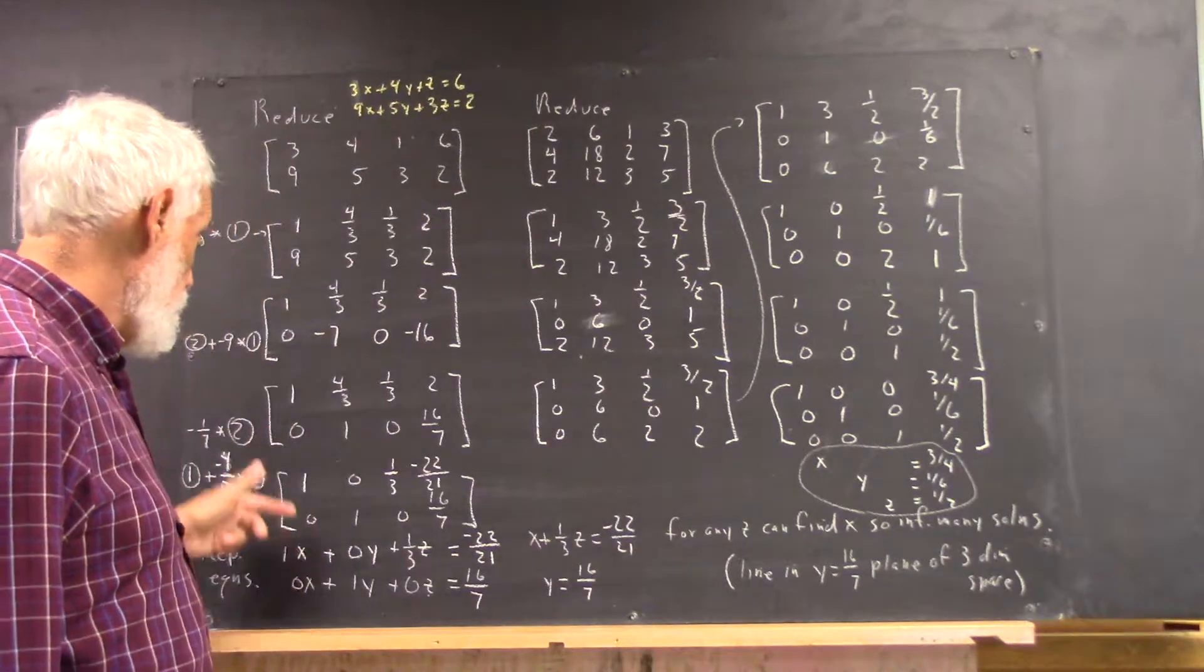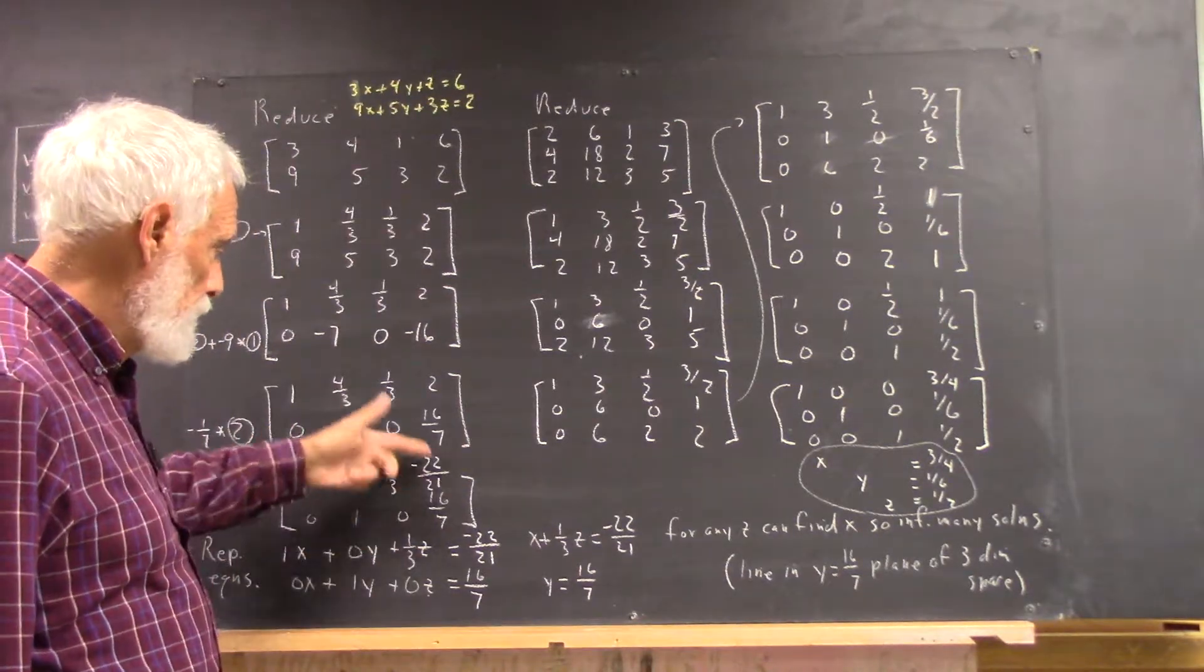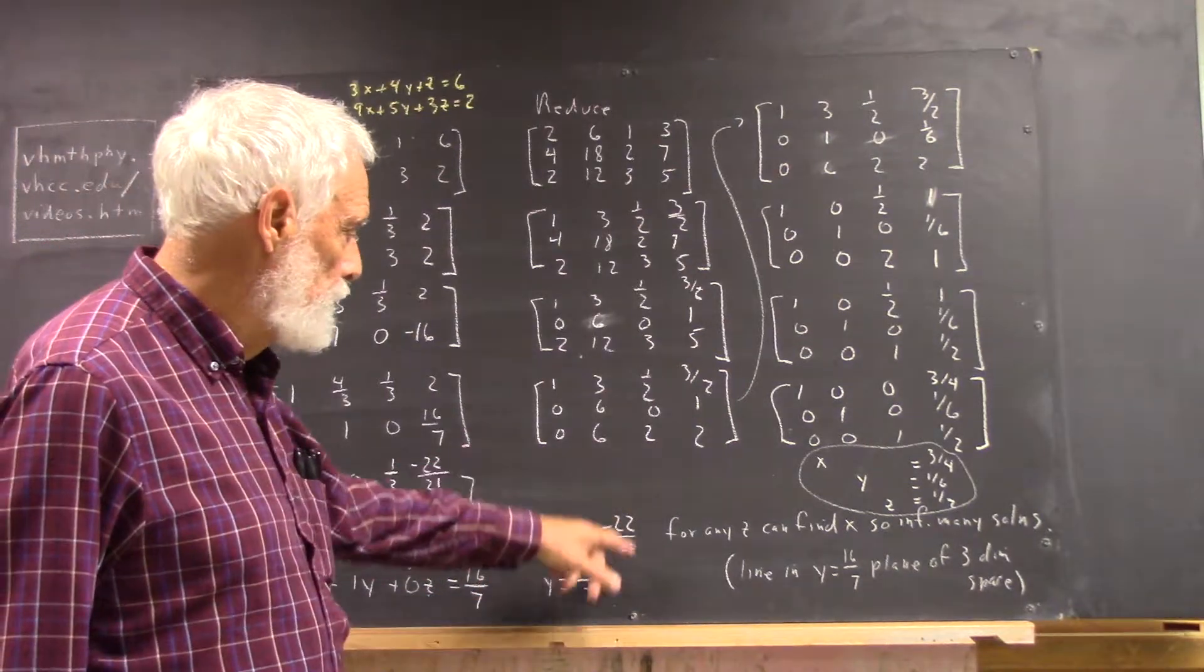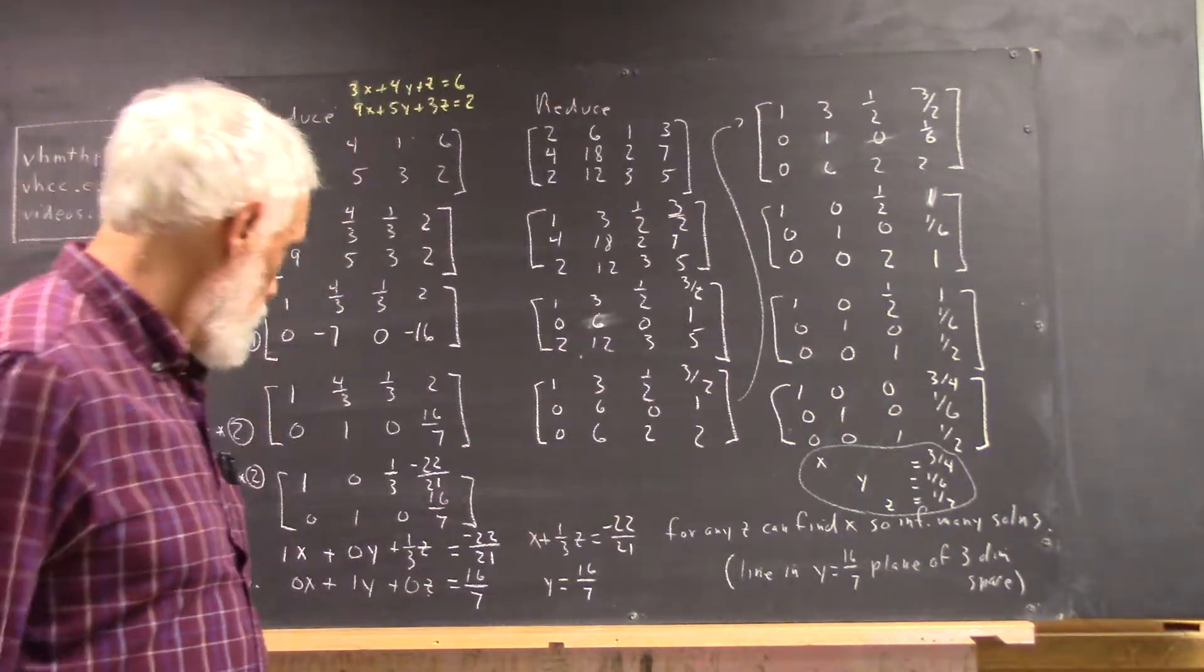Here we have a 0y, and we have an x and a one-third z and a negative 22 over 21. So we get x plus 1 third z equals negative 22 over 21.